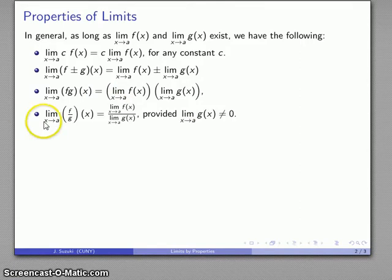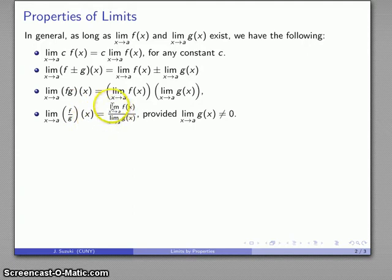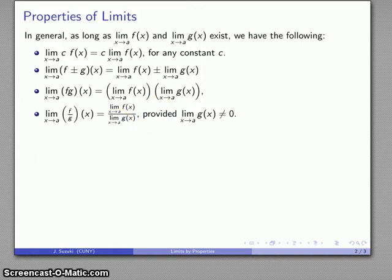Finally, I might look at the quotient — the limit of a quotient f over g of x — and this is going to be the quotient of the two limits. One requirement here is that the limit of the denominator cannot be equal to zero, because limits still require us to adhere to the rule that you cannot divide by zero.